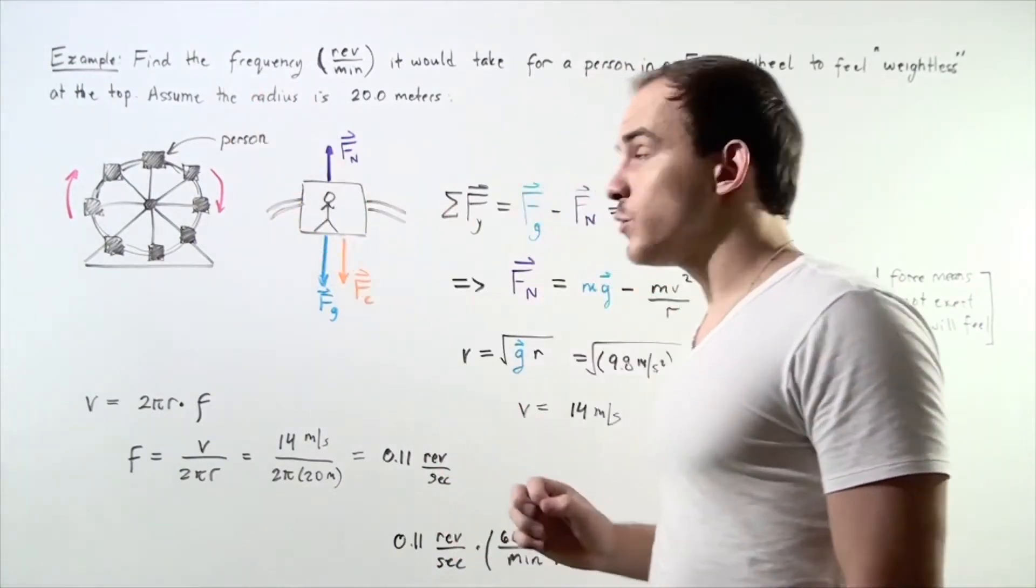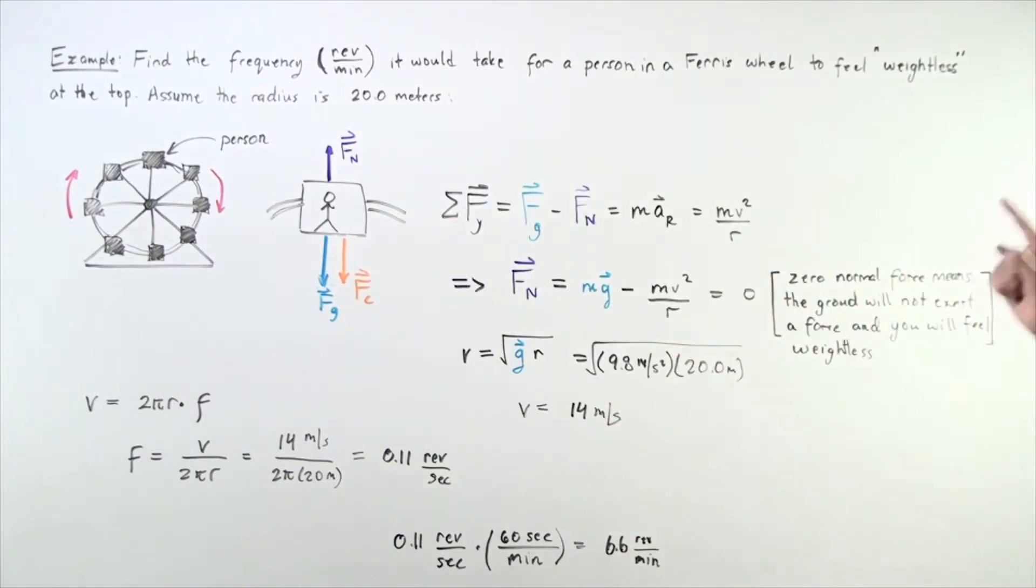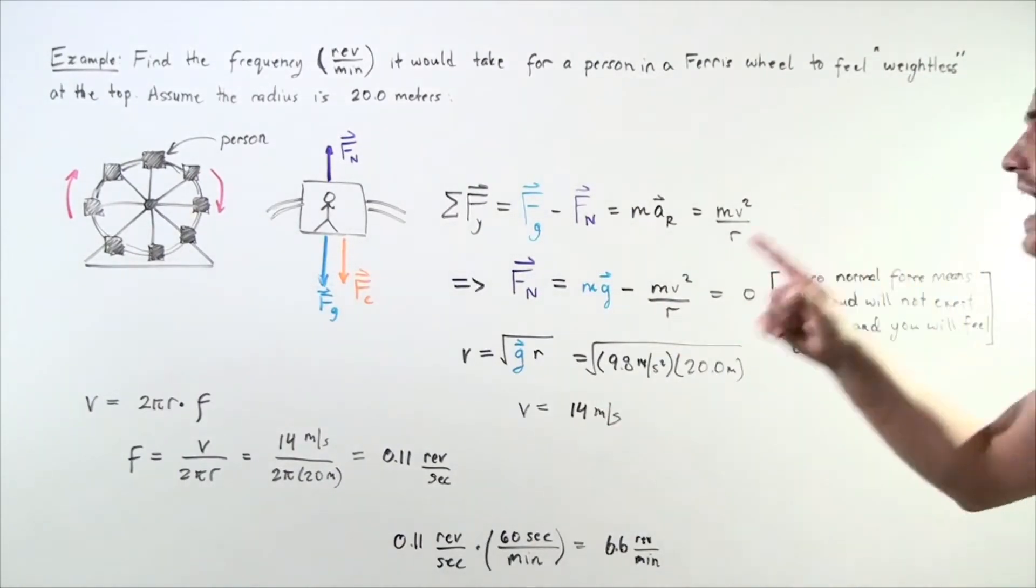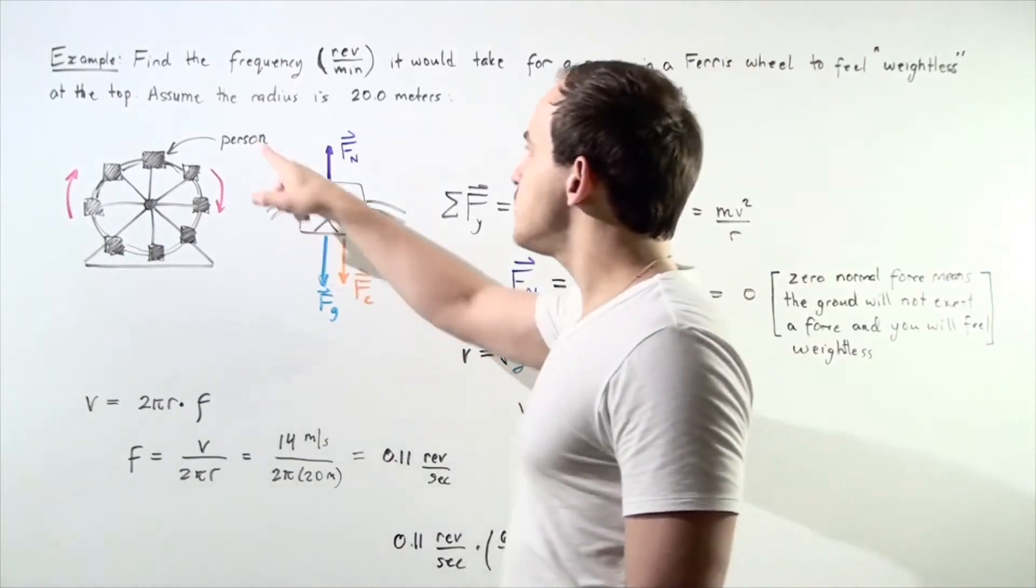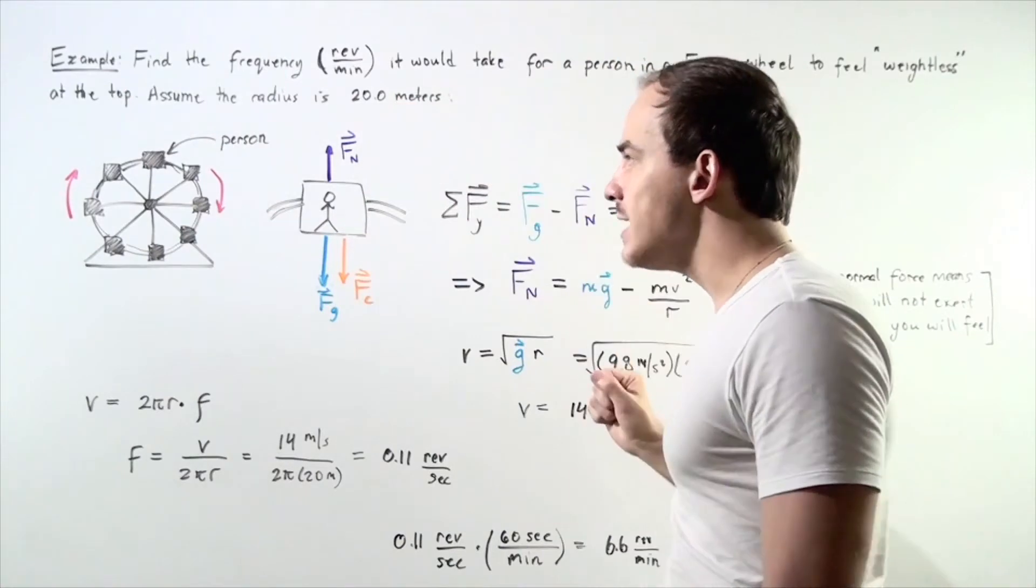We want to find the frequency it would take for a person inside the Ferris wheel to feel weightless at the top of the arc. Let's make the assumption our radius of the Ferris wheel is 20 meters.